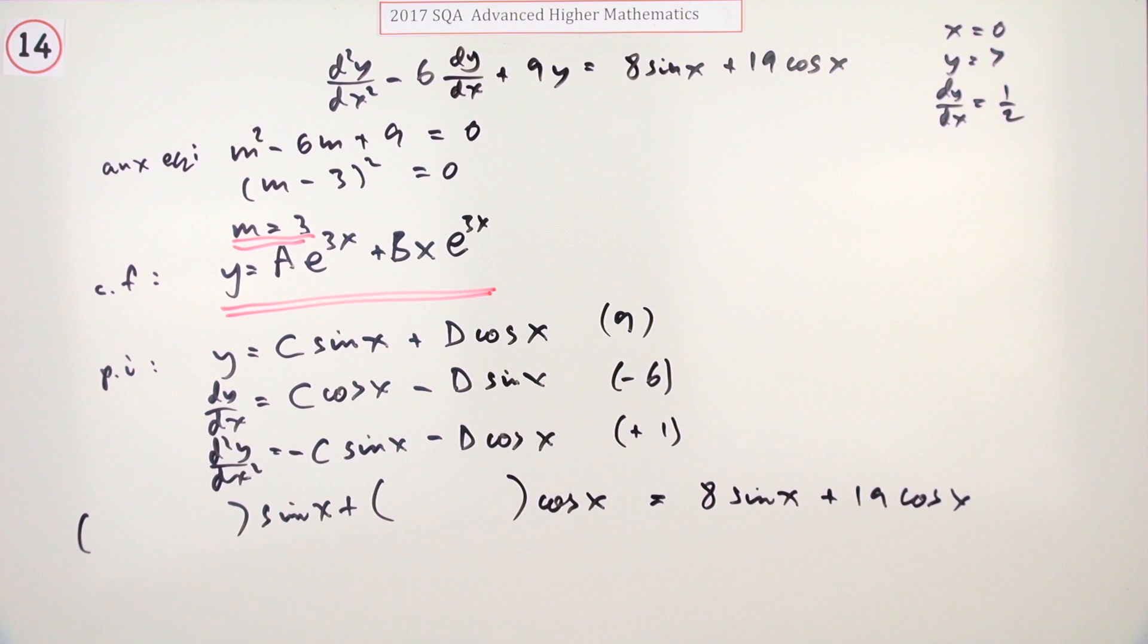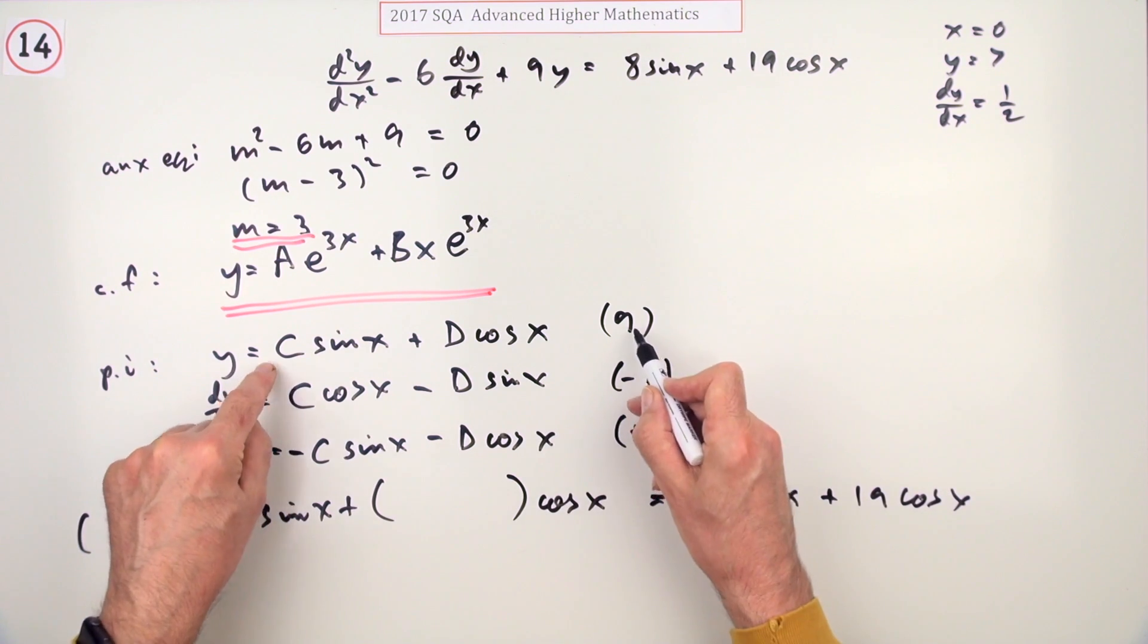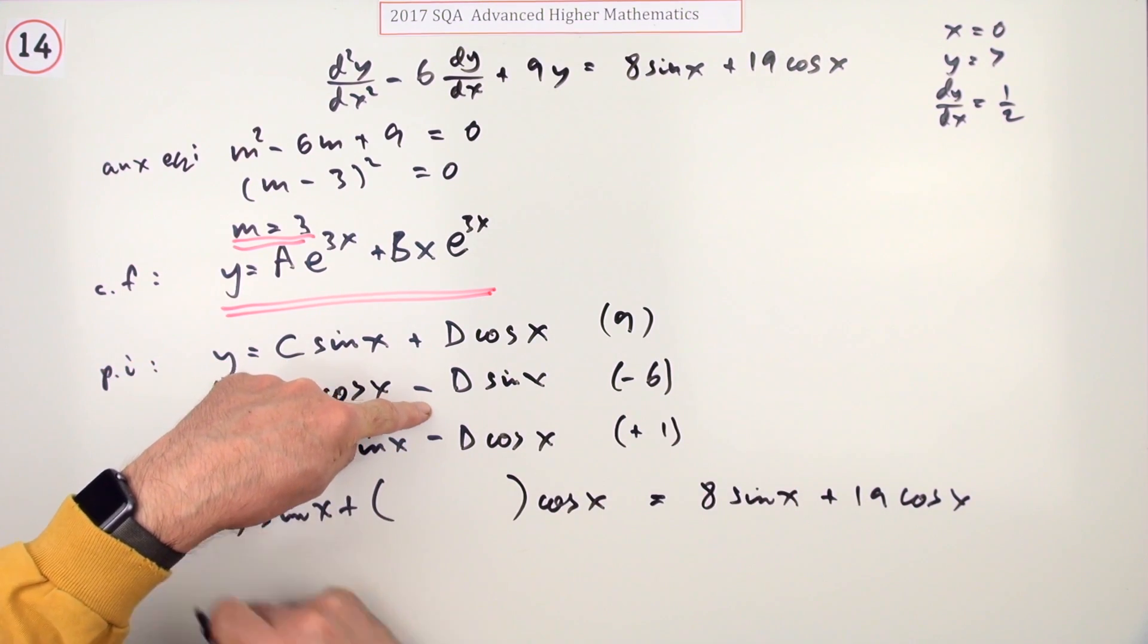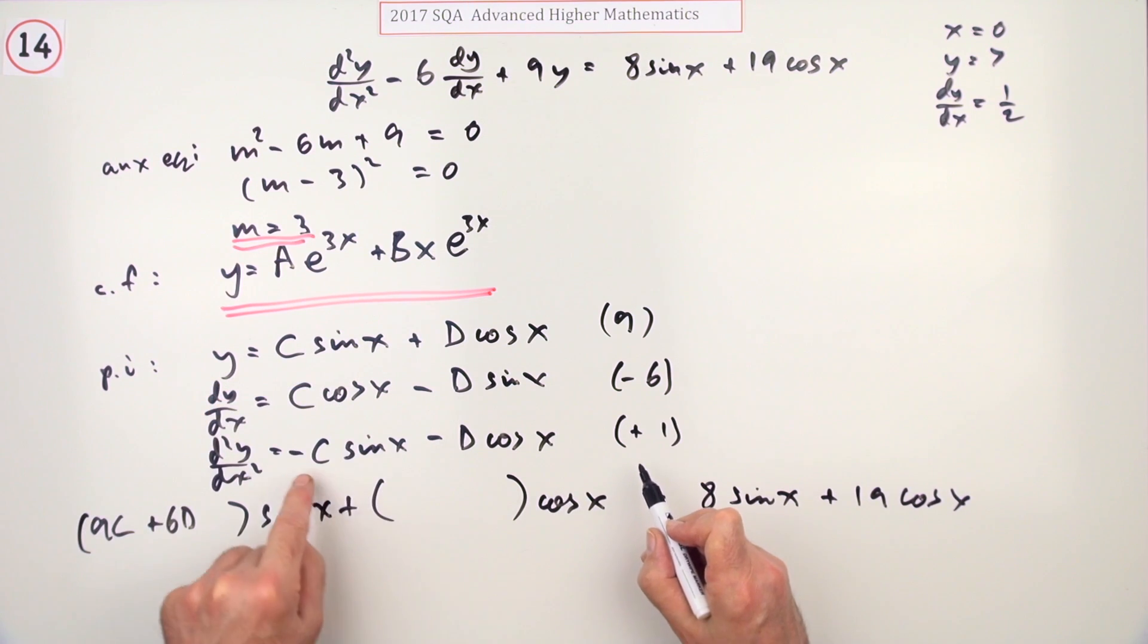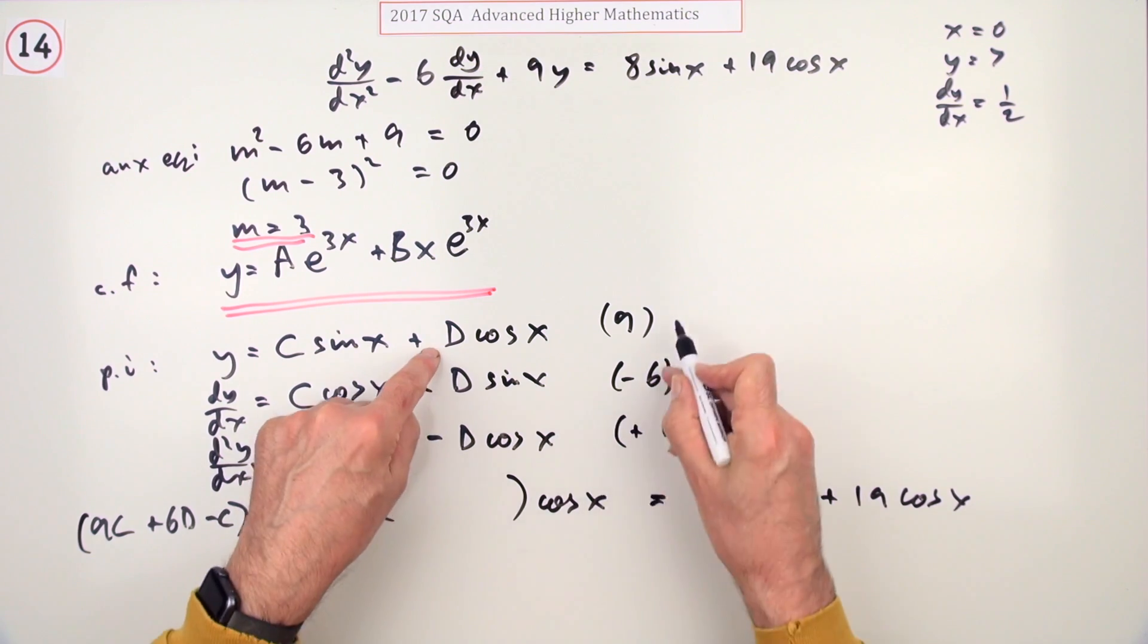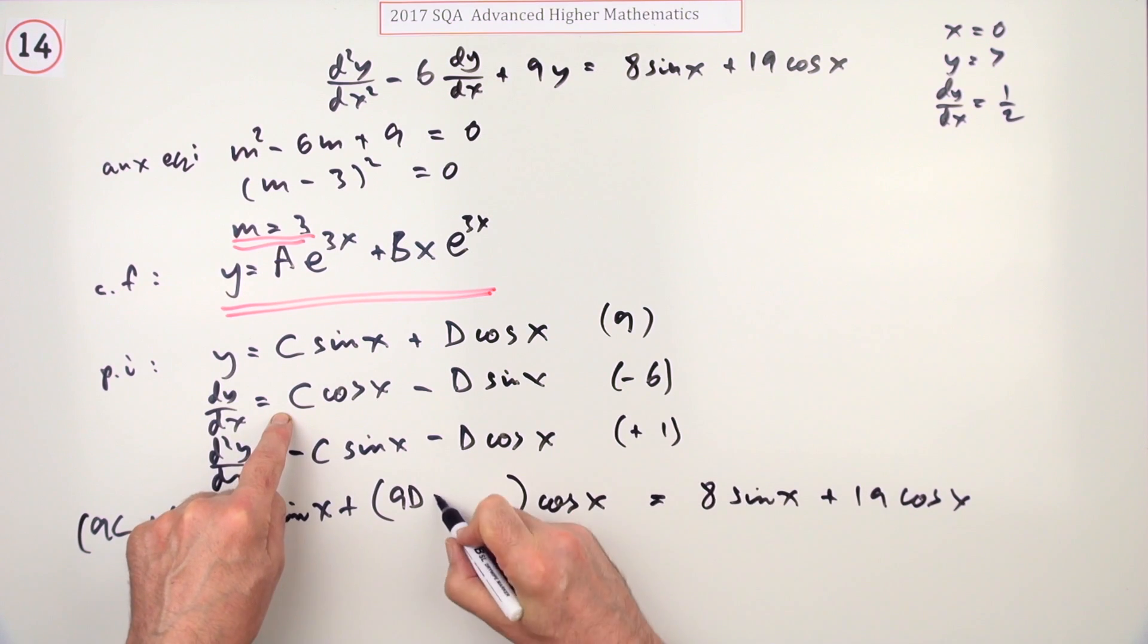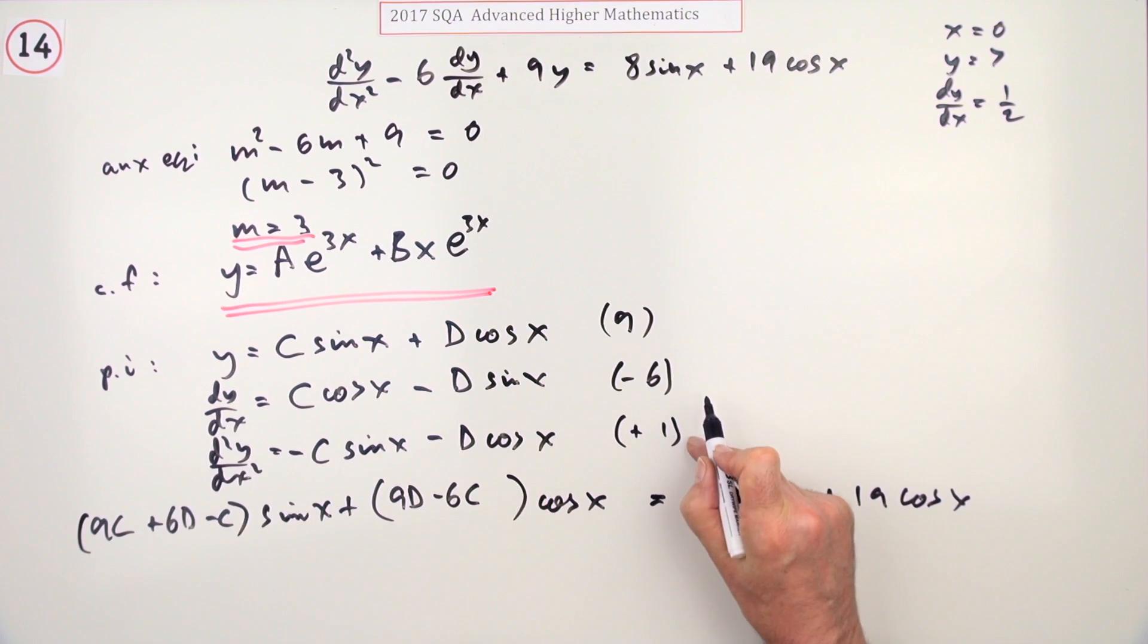Where's all my sine x's? I'm going to have 9C minus minus, so plus 6D, and then back to sine x again is minus C. What about the cos x's? I've got 9D, minus 6C, and for cos I've got minus D.